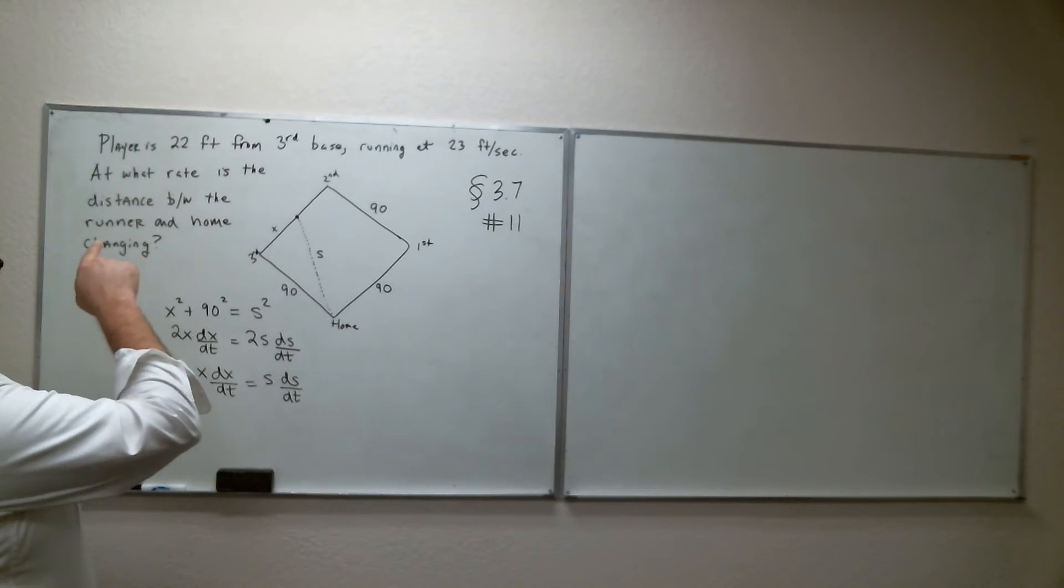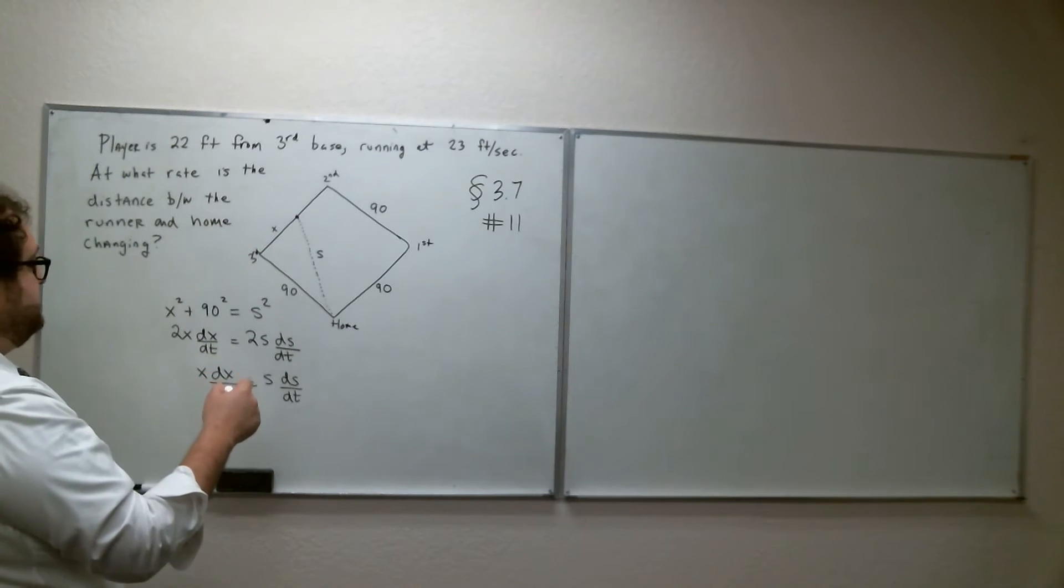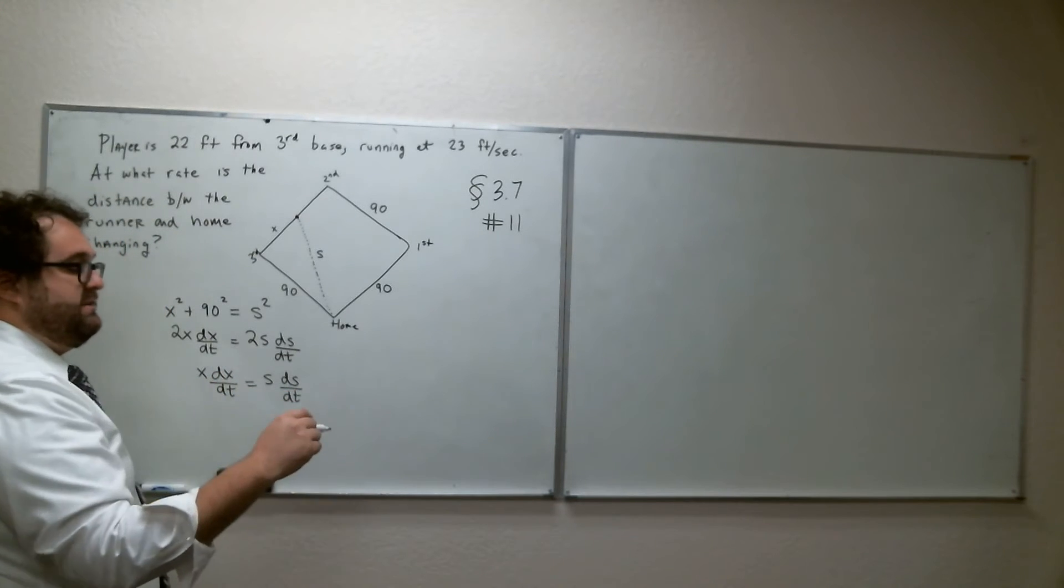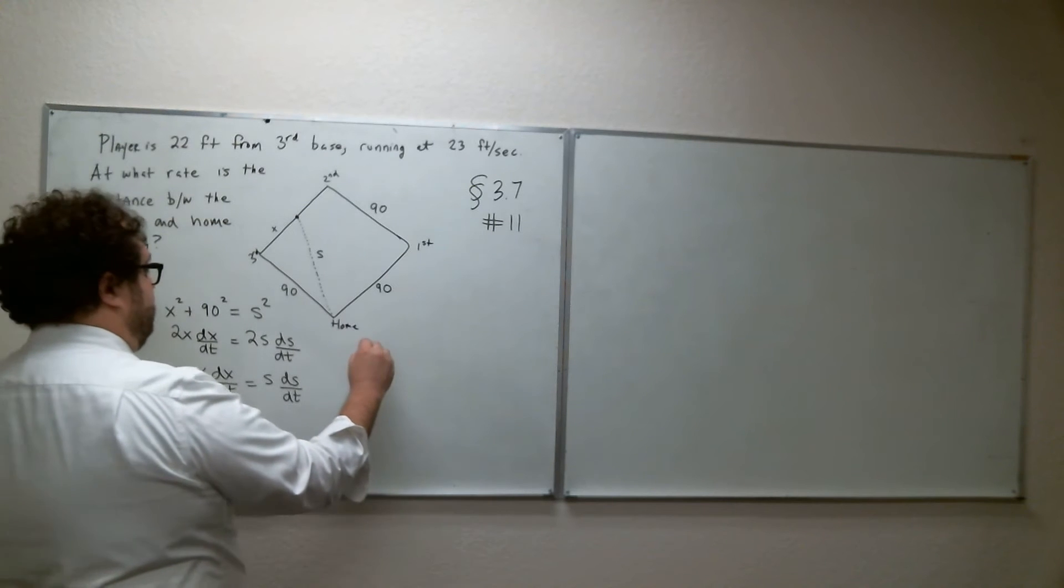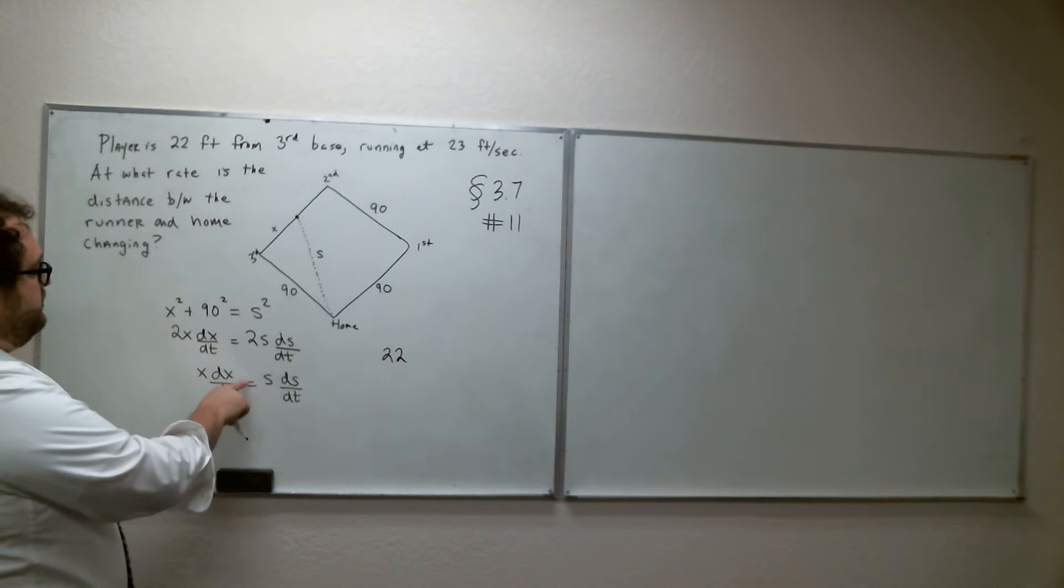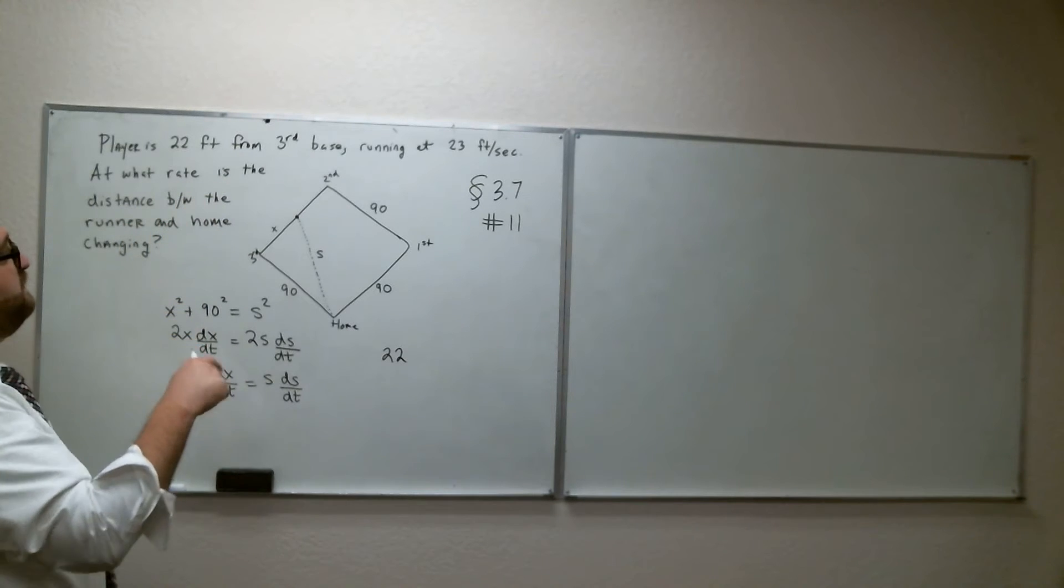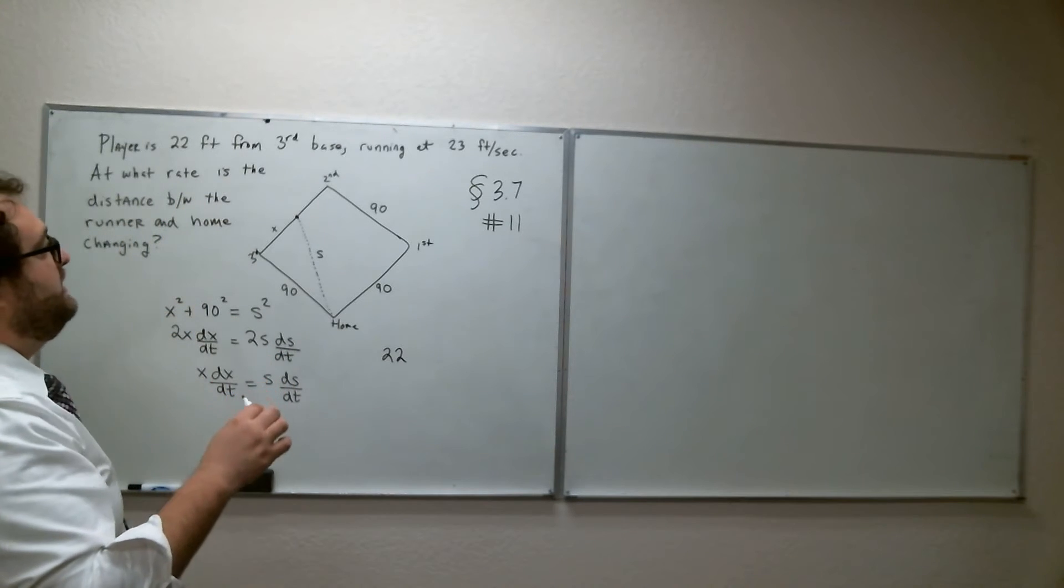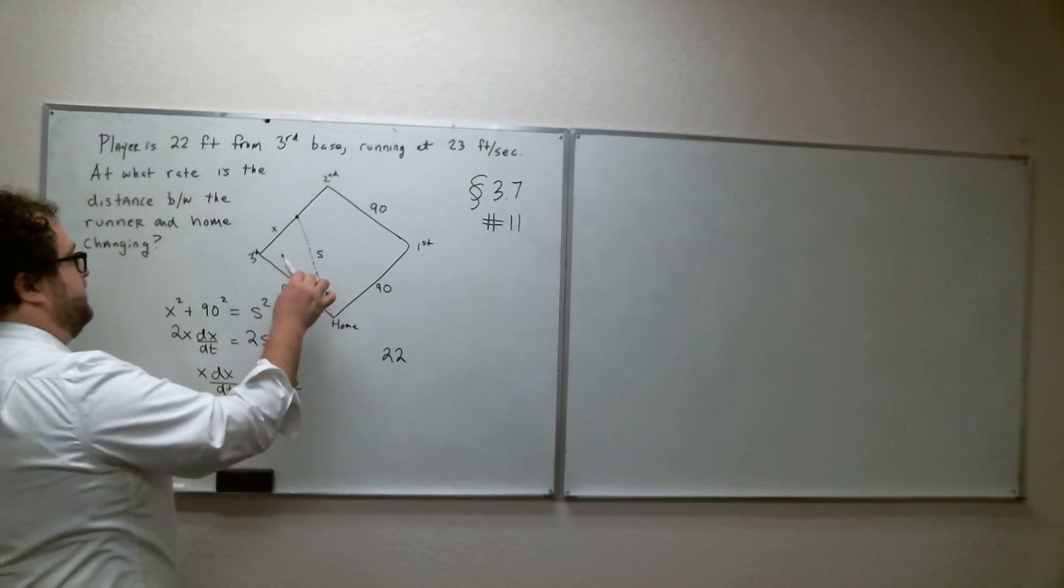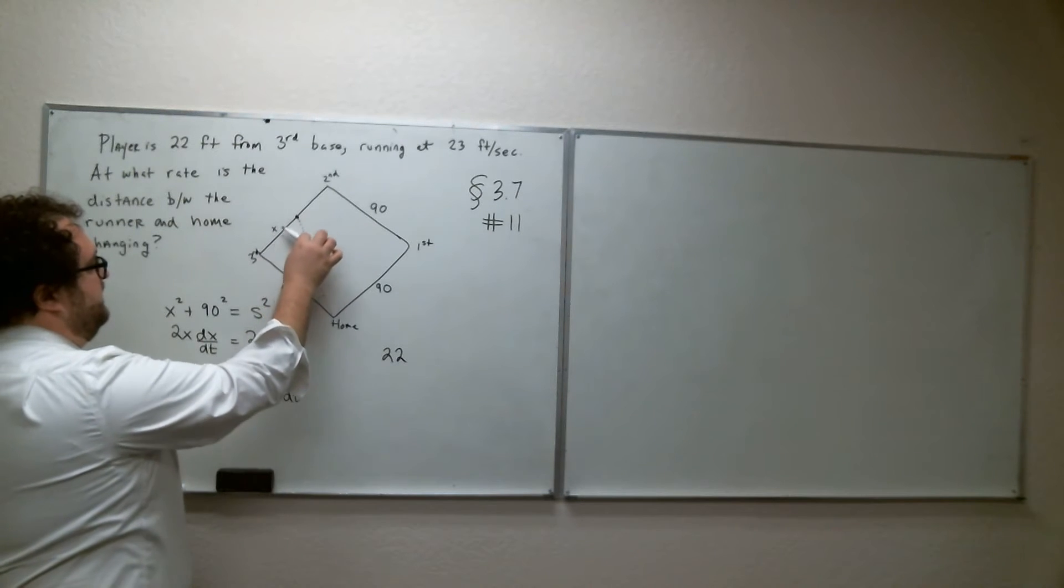Okay, it says player is 22 feet from third base. That's X, so 22 equals X. So we can rewrite this equation, just substituting in the knowns, and we can say that 22 is X. Now, do we know DX/DT? Let's see here. Player is 22 feet from third base, running at 23 feet per second. So what does that tell us? The player is 22 feet away, running at 23 feet per second toward third base.